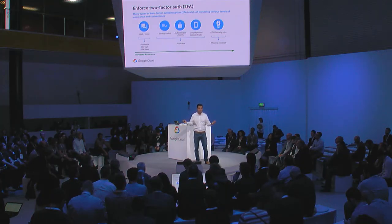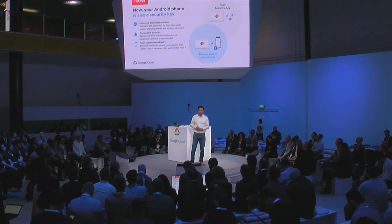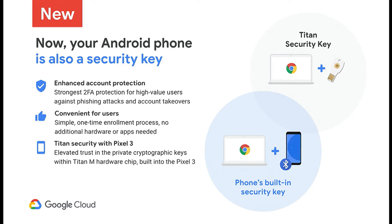We understand it's sometimes harder to roll out security keys to an entire workforce, including contractors and partners. So we've made it simpler by enabling Android phones as a security key. Android version 7 or higher can be enrolled as a security key instead of a physical one, giving you the security of a security key with the convenience of a mobile phone — no hardware required, no apps to install. For an additional level of assurance, Pixel 3 has an embedded Titan M hardware chip manufactured by Google, but most Android 7+ phones can now serve as your security key.